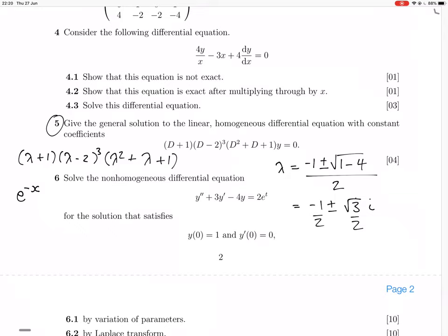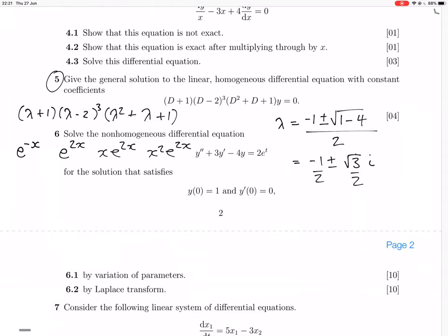The next one, lambda minus 2 cubed, that gives us a bunch of terms. It gives us first term e to the 2x, then we have x e to the 2x, and then we have x squared e to the 2x, so it's three terms. Then the complex things will give us a sine and a cosine. So the minus half, the real part of it, is reflected in having e to the minus half x. And then the other bit is reflected, we have sine of root 3 over 2x and the other factor will be e to the minus half x cos root 3 over 2x. Then you put those together in a linear combination.